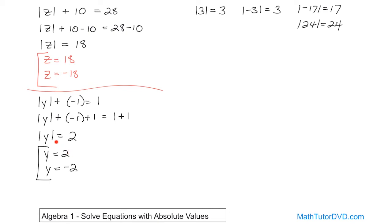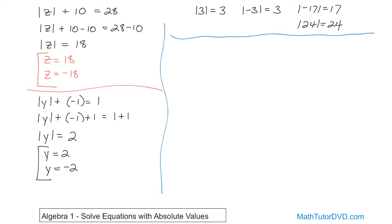The reason is because if I stick 2 in here, absolute value of 2 gives me 2. If I stick negative 2 in here, absolute value of negative 2 also gives me 2. So those two separate solutions both work. In all the previous equations we've had there's only been one solution, but when you have an absolute value, you actually have two solutions. Sometimes in algebra you're going to have more than one solution, so you kind of have to get used to that idea.